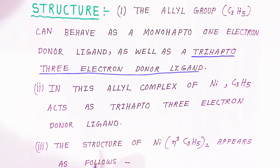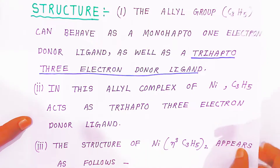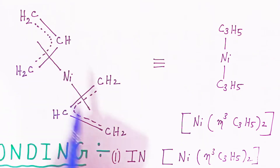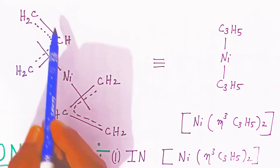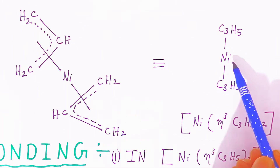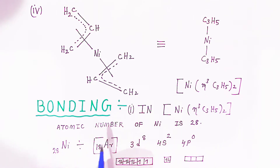In this allyl complex of nickel, C₃H₅ acts as a trihapto three-electron donor ligand. The structure of the nickel complex appears as follows: nickel will be sandwiched between these two allyl groups, with all three carbons of each allyl group participating in the bonding.